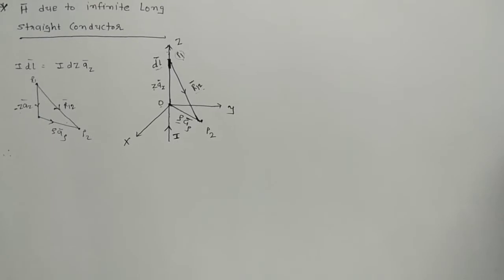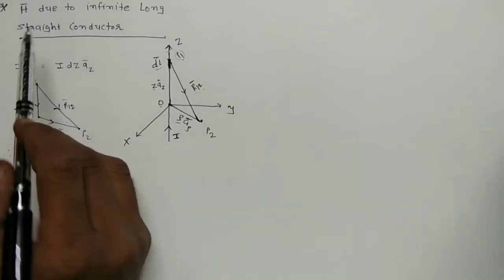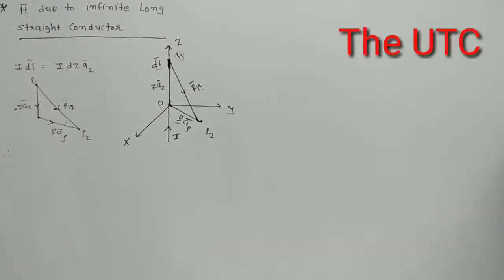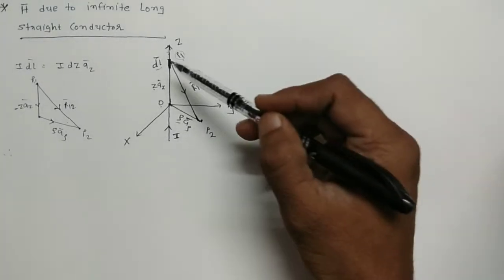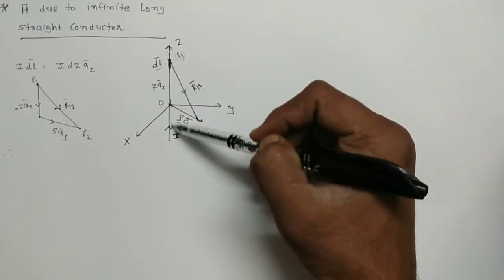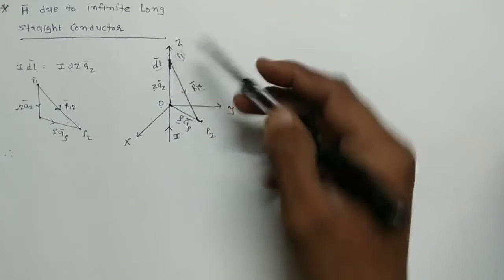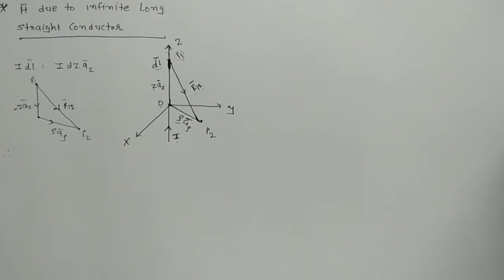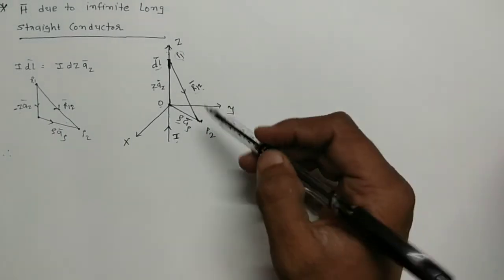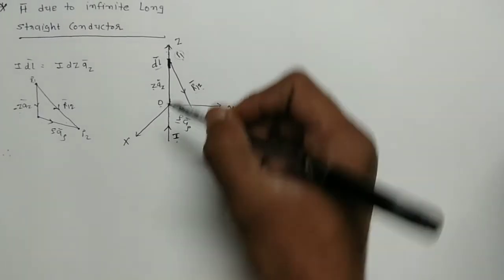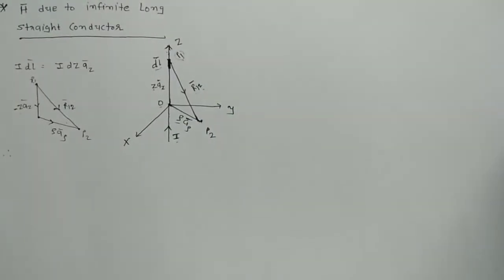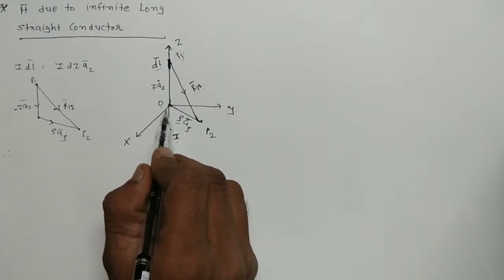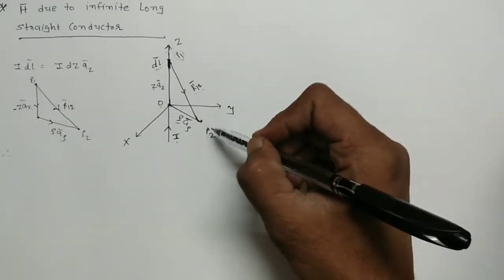Hello everyone. In this video we find out magnetic field intensity H̄ due to an infinite long straight conductor using Biot-Savart Law. For that I am considering an infinite straight conductor on the Z-axis, with direct current I passing through it. Our task is to find the intensity H̄ at point P2 due to this straight infinite conductor, where point P2 is at distance ρ from the origin.